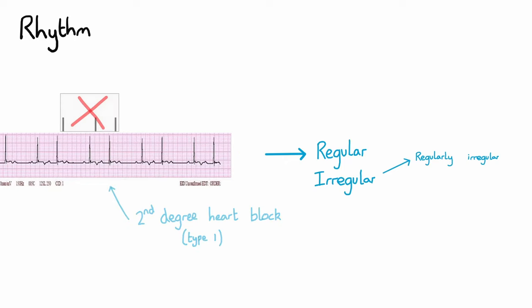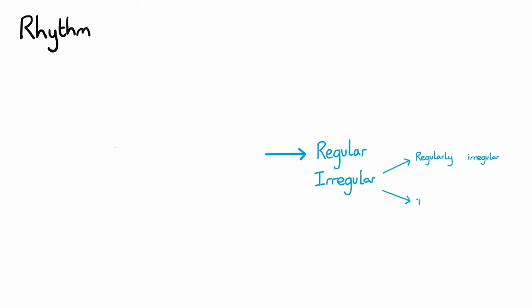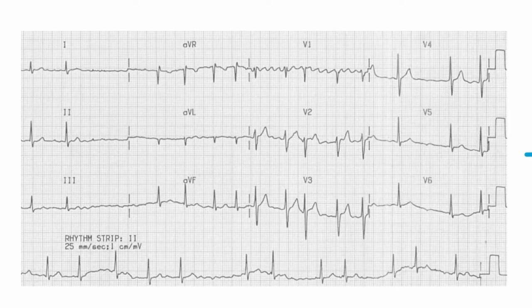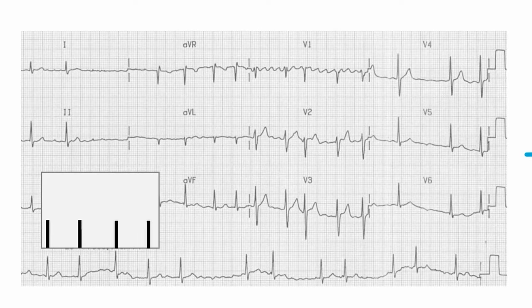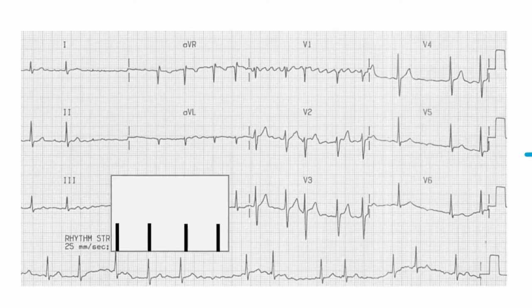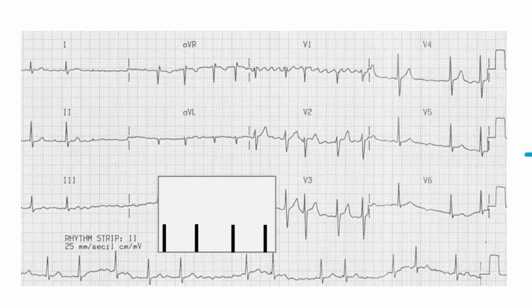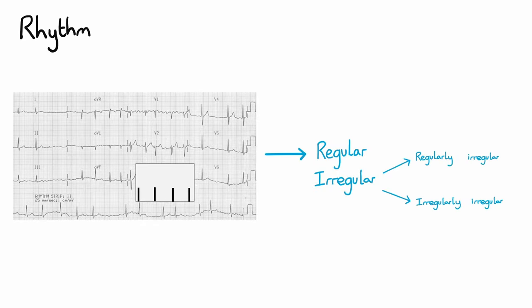Irregular rhythms can also be irregularly irregular where there's no predictable pattern to the QRS complexes. Here's an example. This particular ECG shows atrial fibrillation, which is the commonest irregularly irregular rhythm you're likely to come across. Again, atrial fibrillation is covered in more detail in the next video.